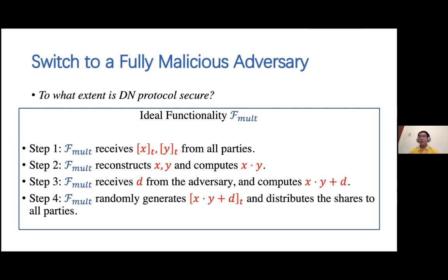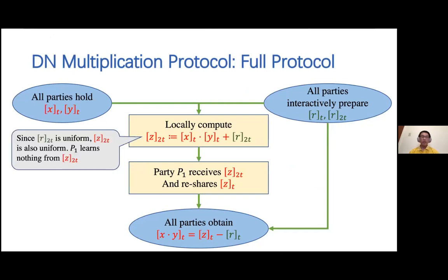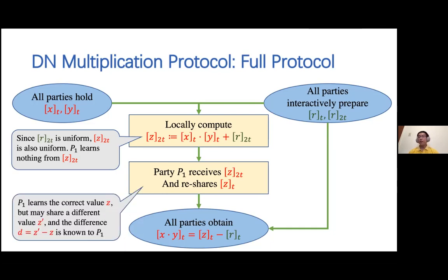I would like to provide some insights on why this theorem holds. Let's go back to the DN multiplication protocol. For simplicity, we only consider the worst case where the first party P1 is corrupted. First, the use of a random degree-2T sharing of R ensures that the degree-2T sharing of Z = X*Y+R is also uniformly random. Therefore, when P1 collects the whole degree-2T sharing, P1 only learns a random sharing and nothing else. Second, P1 can reconstruct the correct secret Z, but the only thing P1 can do is reshare a different value Z'. The difference D = Z' - Z is known to P1. After sharing this value to all parties, the final result differs from the correct value by constant D.